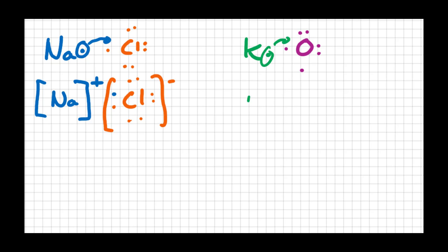What we need is we need another potassium atom. It too can give up an electron to oxygen. And the result is that we will now have two potassiums, each with a positive charge.